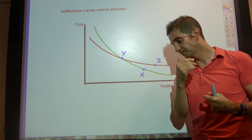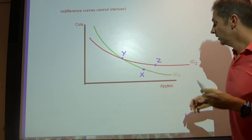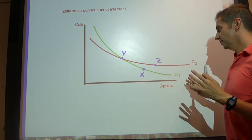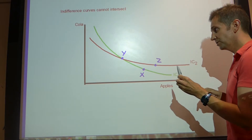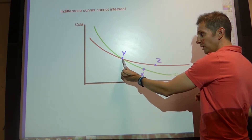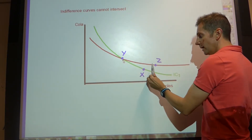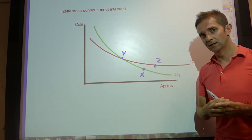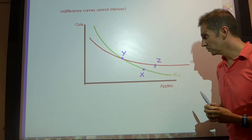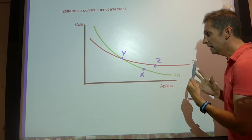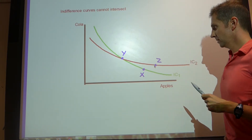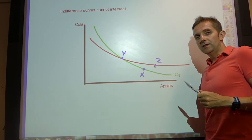However, because the curves intersect, it also suggests that the consumer is indifferent between Y and Z. So the consumer would be quite happy to consume Y or Z on indifference curve two.